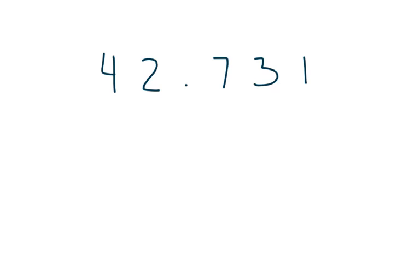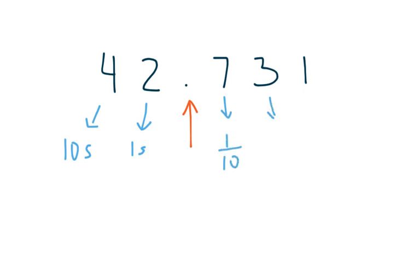If we look at the number 42.731, we've got a decimal point right here, and we've got values to the left of that decimal point and values to the right of that decimal point. Those place values are: we have the tens place, we have the ones place, we have the tenths place, we have the hundredths place, and we have the thousandths place. When doing a rounding problem, make sure you're rounding to the proper place, so make sure you understand these place values and their locations.